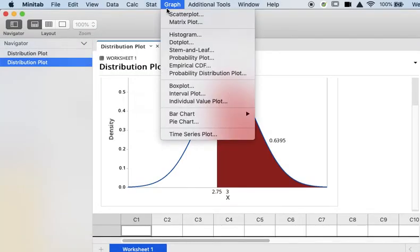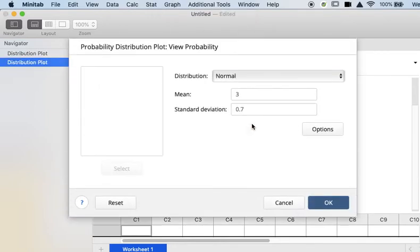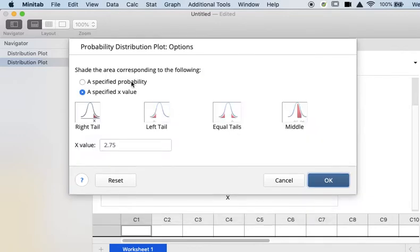I'm going to go to probability distribution plot and view probability again. My mean and standard deviation are not changing, but this time I'm shading the area corresponding to a specified probability.